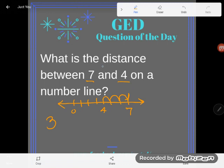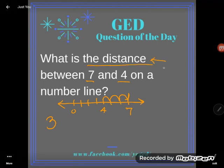Or in order to find distance, remember distance is synonymous with difference. You could just subtract, take the larger number seven, subtract the smaller number four, and you'd get three.